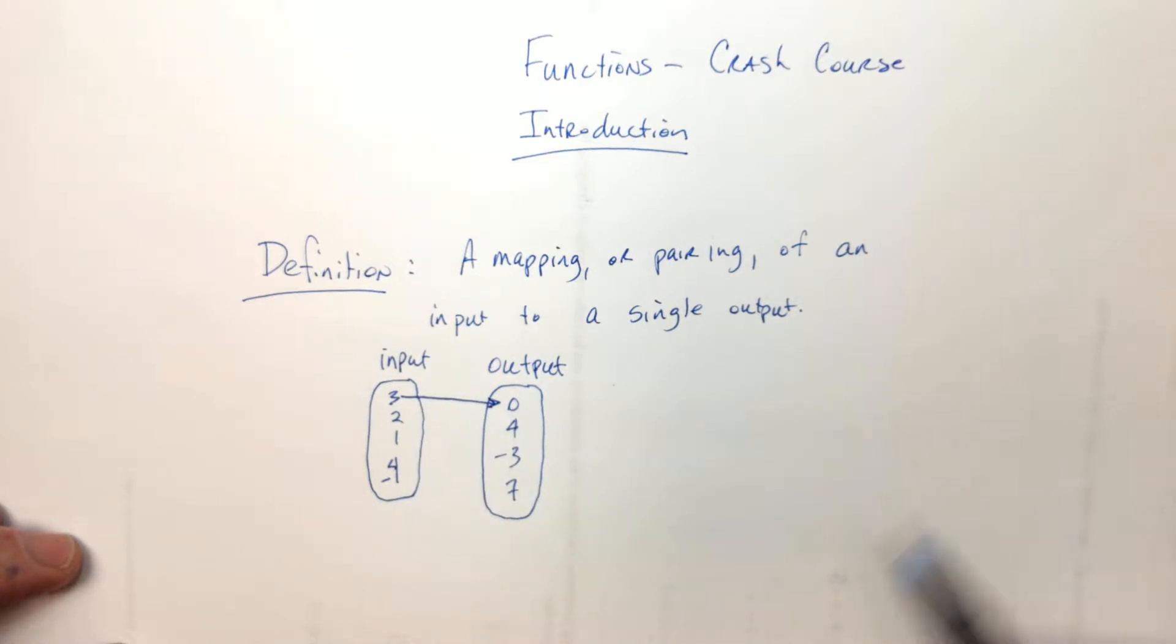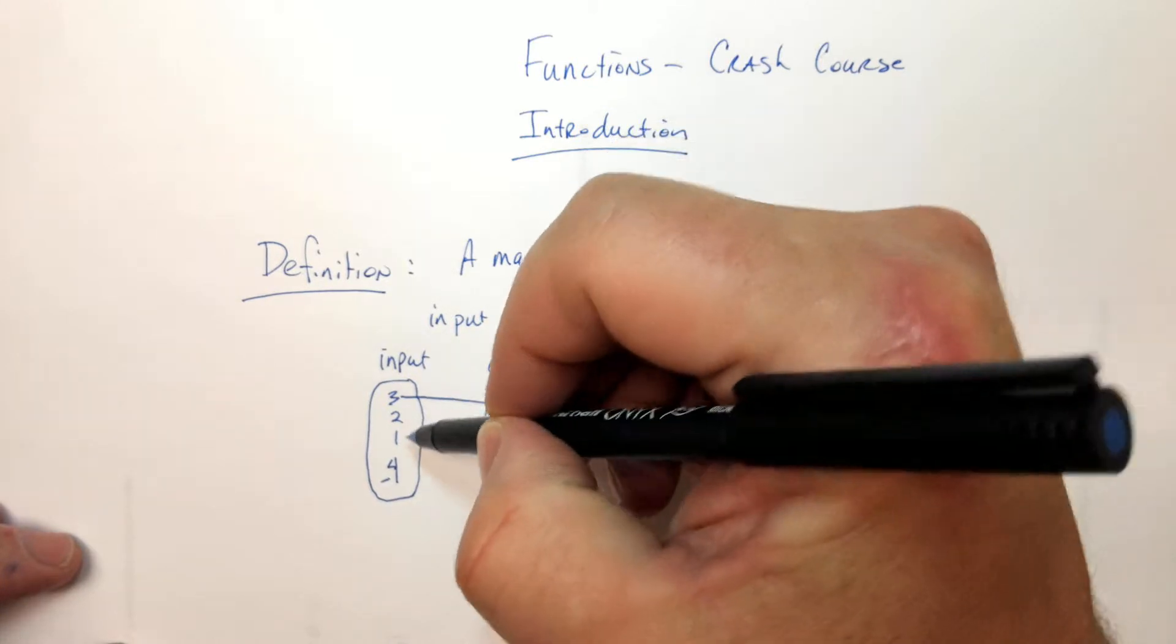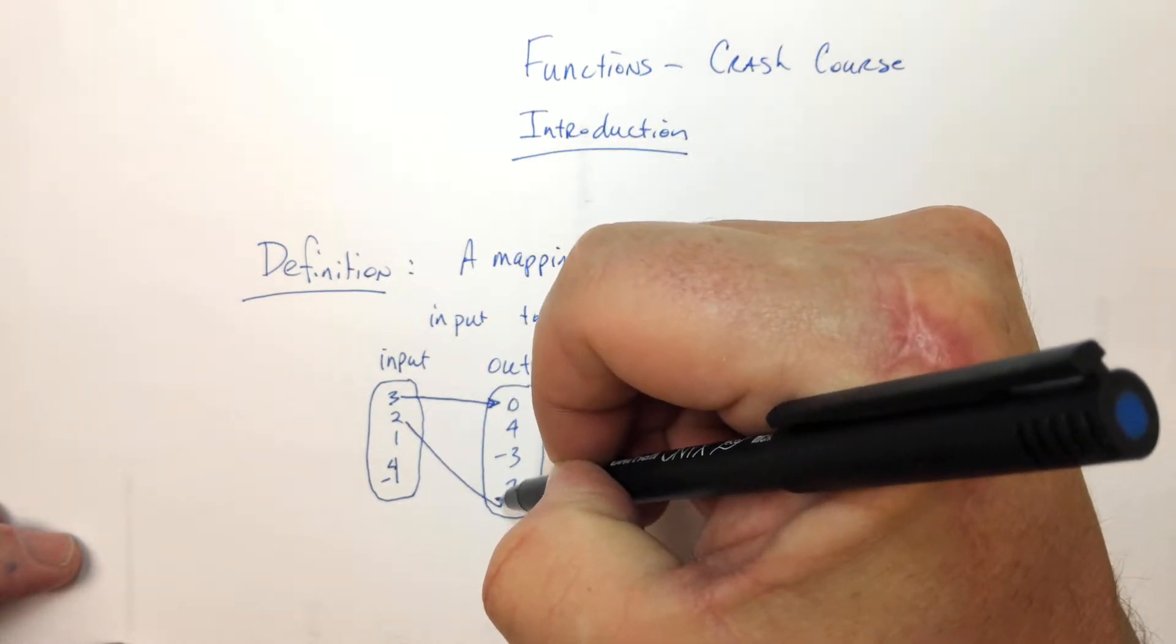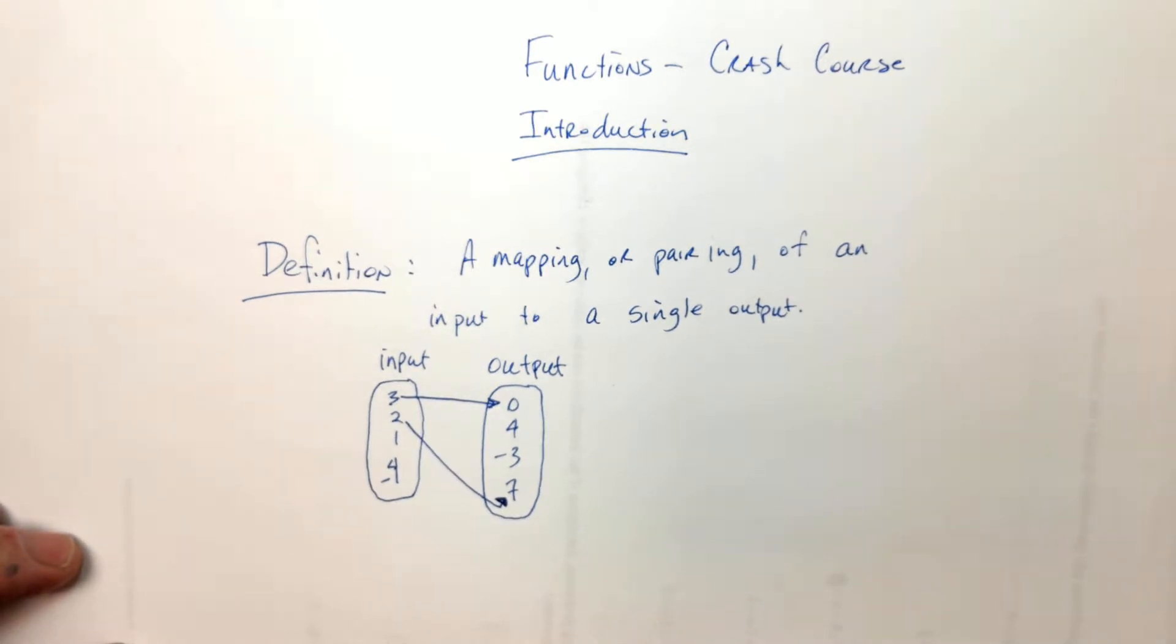This is going to be a function as long as 3 only goes to one number. It doesn't matter which number, but it just goes to one number. And if 2 only goes to one number, it's still a function, so it could go all the way to - overshot the target and backed up. As long as 2 only goes to one number, and if 1 only goes to one number, it can go to the same exact number as another.